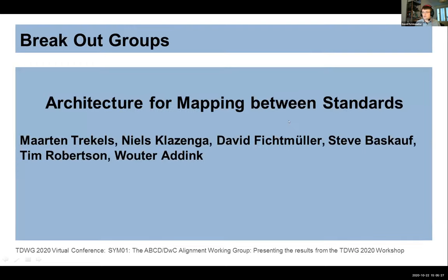This brings us to the next working group. I'm going to report on the group that took care of the mapping between standards. This group didn't really produce much, mainly due to time and personal constraints, so I took over and added some of the information we already collected during the session and extended on it from an ABCD perspective, trying to cover Darwin Core as well. First, we collected what existing mappings are already out there.